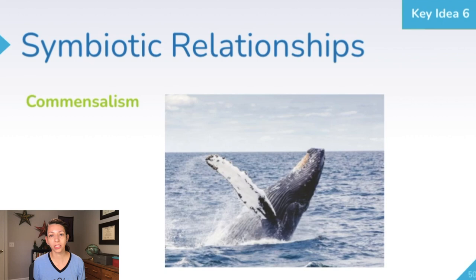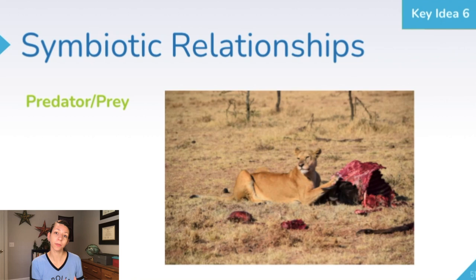An example of commensalism is barnacles on a baleen whale — no big deal for the whale, but the barnacles have a place to live and a home. A predator-prey relationship is similar to a parasitic relationship, but in this instance the organism that is harmed also dies — it is consumed by the other organism who is benefiting.